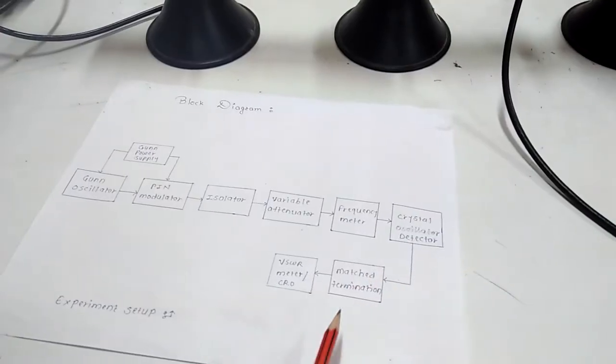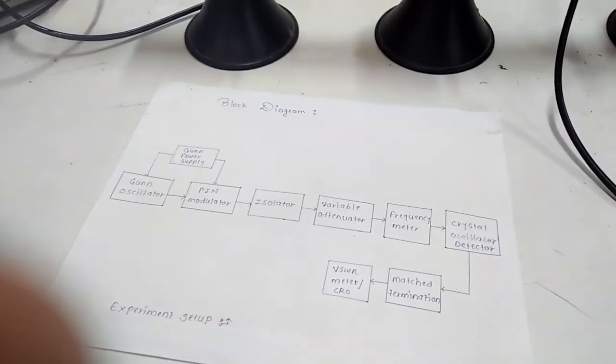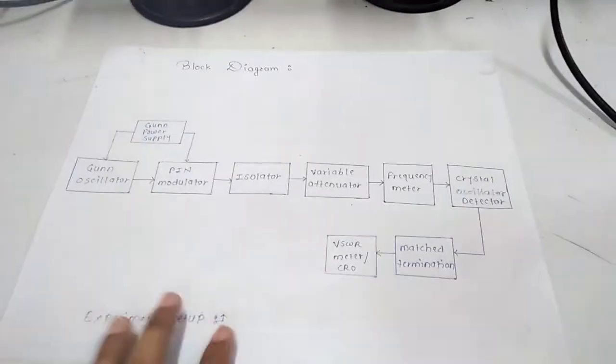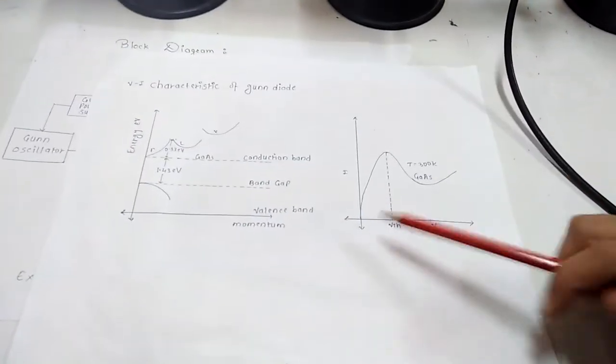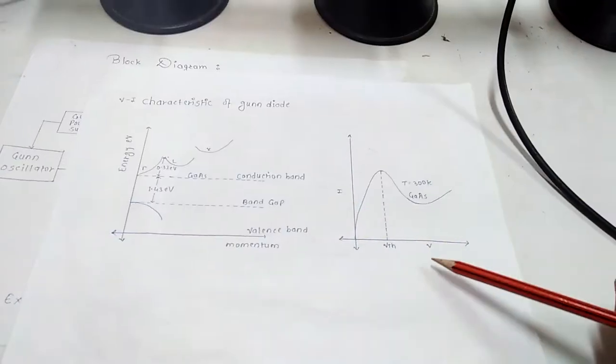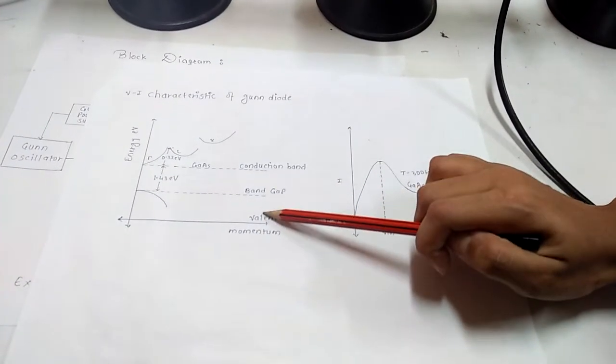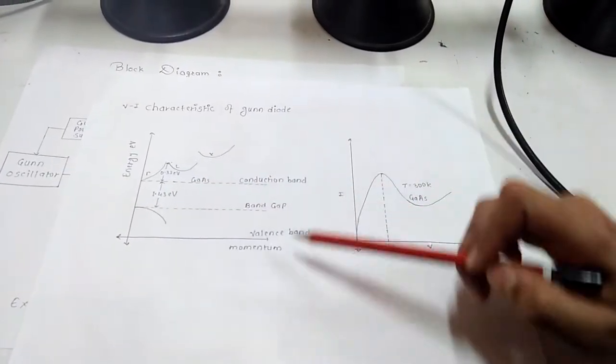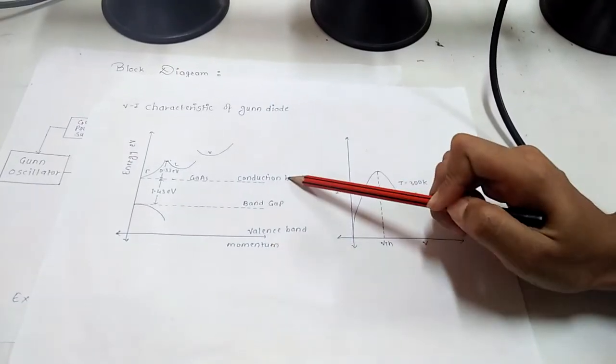Now we will see the ideal characteristic of Gunn diode. To obtain ideal characteristic, we have to take readings of voltage and currents. As the band gap of Gunn diode is 1.43 electron volt, as we give the power supply, the electron travels from valence band to conduction band.